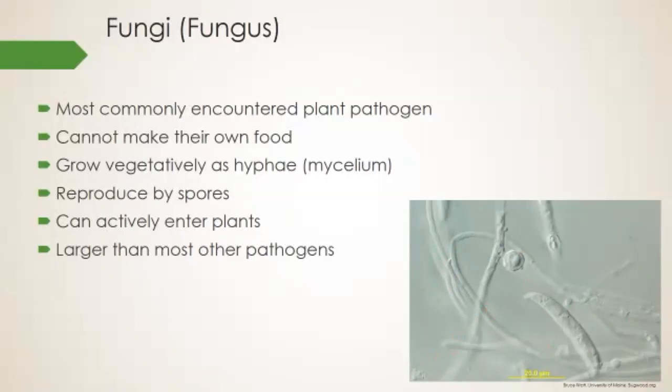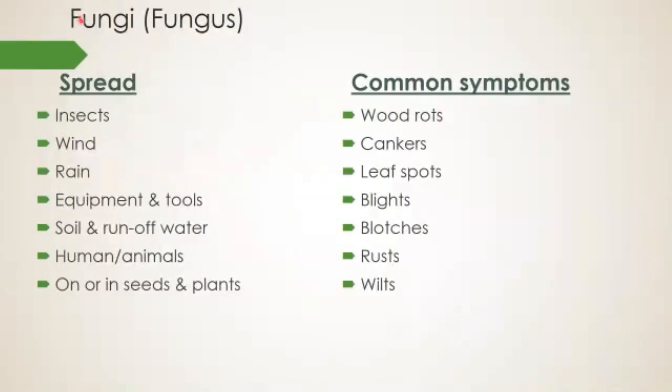How do fungi spread in the garden? They spread by insects, by environment and weather — wind and rain. A lot of fungi and bacteria spread by water splashing on bare soil and then splashing up onto foliage. They also spread on equipment, tools, feet, people's hands, and through soil and water runoff — spread by humans and animals. In propagation they can spread in seeds, plants, and containers. So there are lots of ways it can spread; it's easily transmittable.